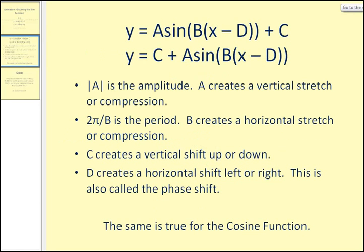Let's do a quick review. If we have the sine function in this form, remember absolute value of A is the amplitude. A creates what's called a vertical stretch or compression.